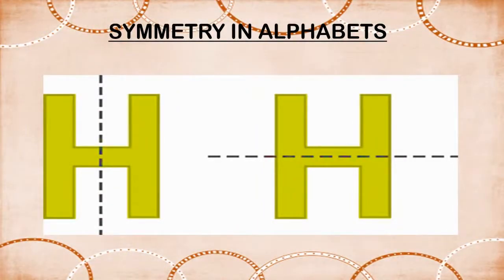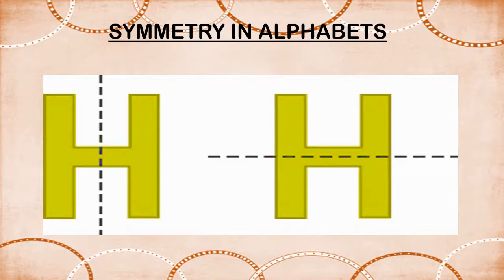Children, now we find symmetry in alphabets also. Look at this alphabet. Can you identify which alphabet it is? Yes, it's H. English alphabet H is symmetrical with respect to the dotted line, because the dotted line in English alphabet H divides it into two parts which fall exactly on one another.